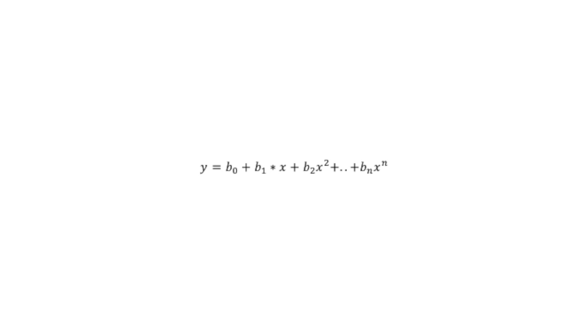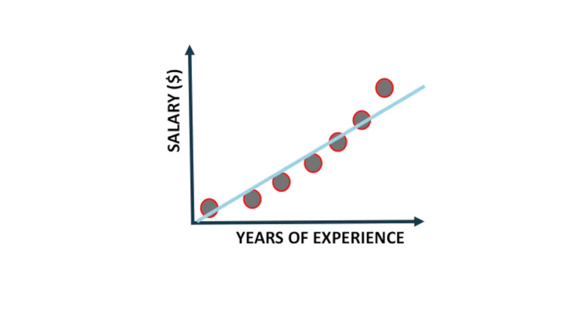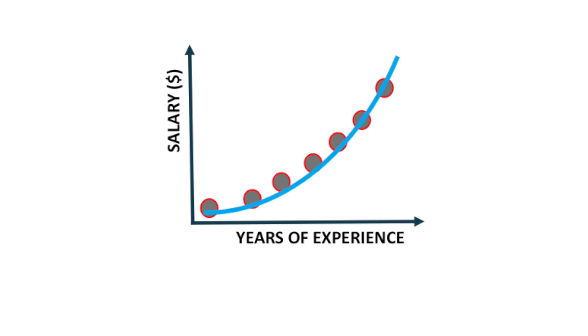What about polynomial regression? Polynomial regression models the relationship between the independent variable x and the dependent variable y as an nth degree polynomial in x. The equation is: y = b₀ + b₁x + b₂x² + ... + bₙxⁿ. If our salary versus years of experience data has a curved shape and we try to fit a straight line to it, we will get a terrible fit. Fitting a polynomial equation instead gives a much better fit. As you increase the order of the polynomial, you increase the complexity of the model and capture much more complex relationships, though the number of parameters will go up as well.